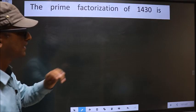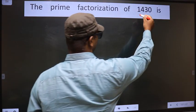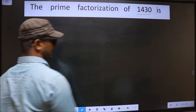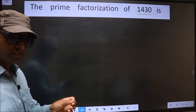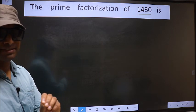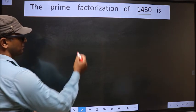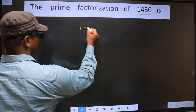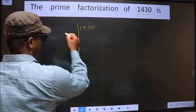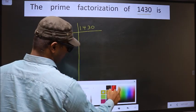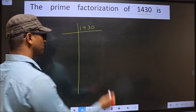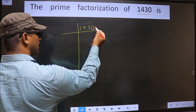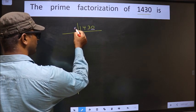The prime factorization of 1430 is... to do prime factorization, first we should frame it in this way. See, that is 1430. Okay, next, for this number the last digit is 0, so we take 5 here.